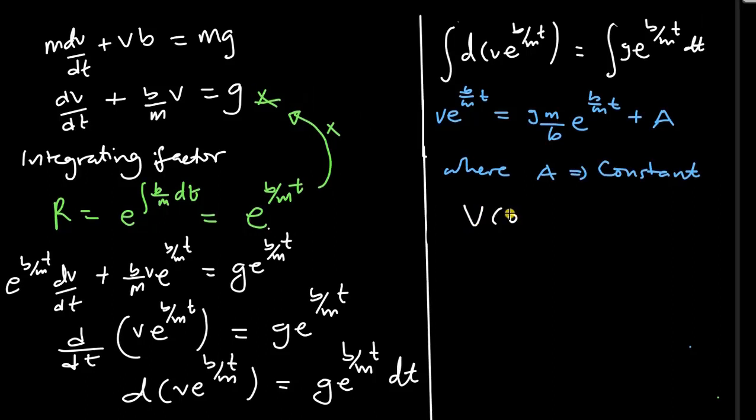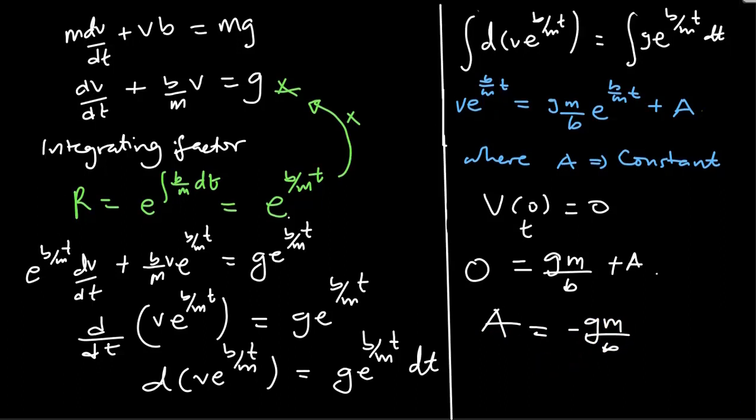If we assume that the body is released with initial speed 0, we can have this as our initial condition. The velocity at t equals 0 is 0. I'll substitute the initial conditions in this general solution. So we have 0 equals gm divided by B plus A. So our arbitrary constant A is negative gm divided by B. Recall that the terminal velocity Vt is gm divided by B. So it actually turns out that A is negative of the terminal velocity.